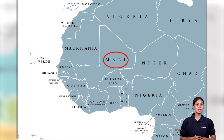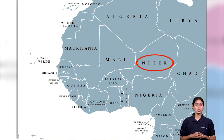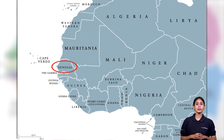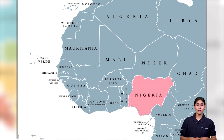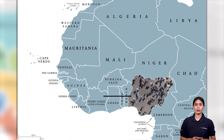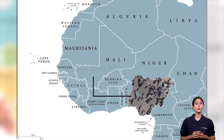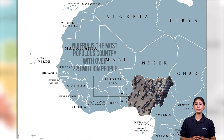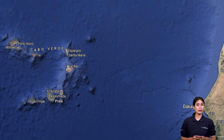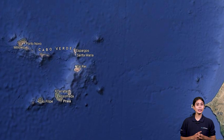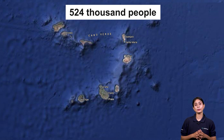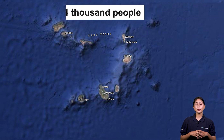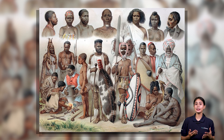Mali, Mauritania, Niger, Nigeria, Senegal, Sierra Leone, Togo. Nigeria is the most populous country with over 229 million people, whereas Cape Verde, an island nation off the coast, has around 524,000 people. The region is home to various ethnic and linguistic groups.